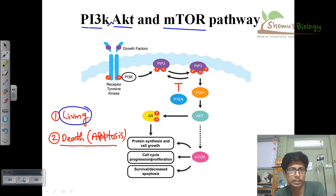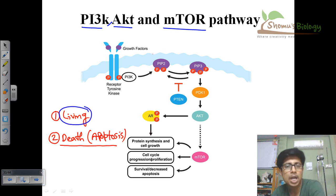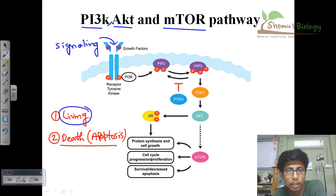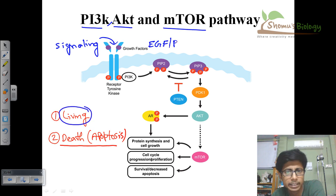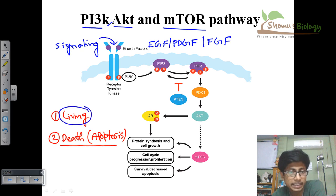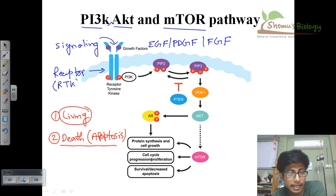There are separate videos for each of these pathways — PI3 kinase, AKT, and mTOR — if you want more detail. The signaling molecules in all these cases are growth factors, since PI3K, AKT, and mTOR are downstream processes sharing the same upstream signal. It can be epidermal growth factor, platelet-derived growth factor, fibroblast growth factor, and so on — many types of growth factors are possible. The receptor in this case is an enzymatic receptor: receptor tyrosine kinase, or RTK.